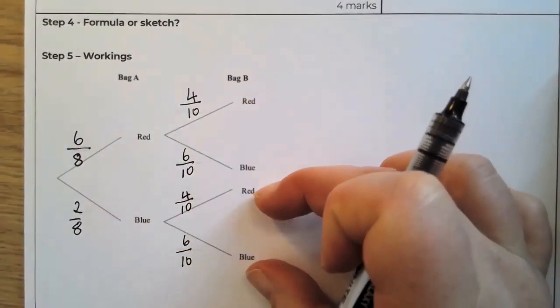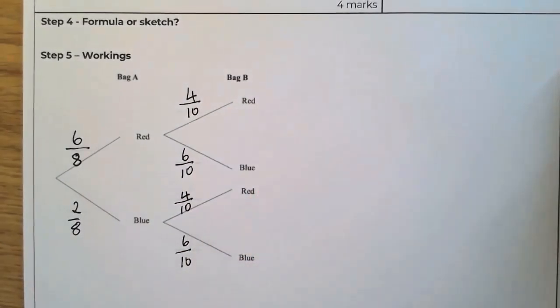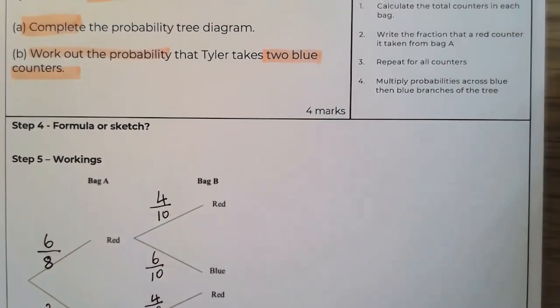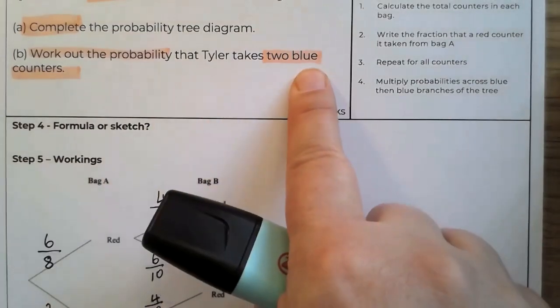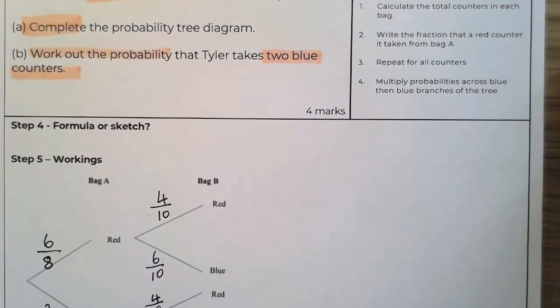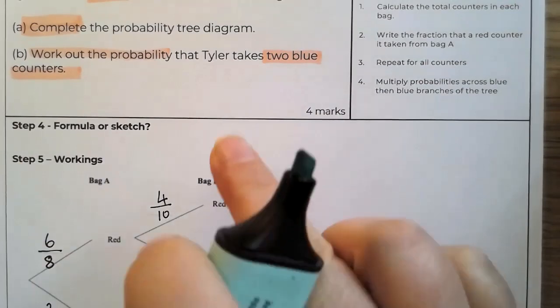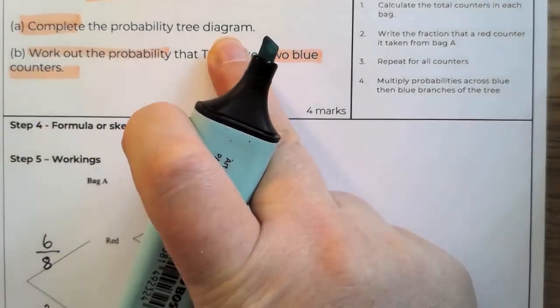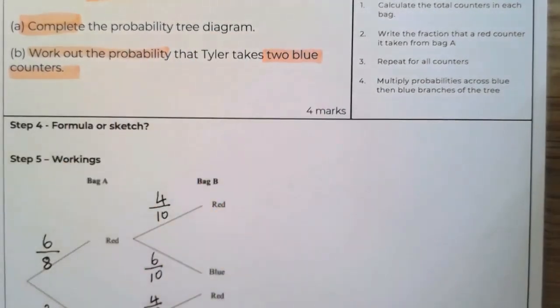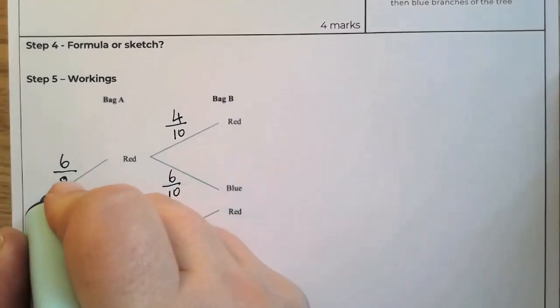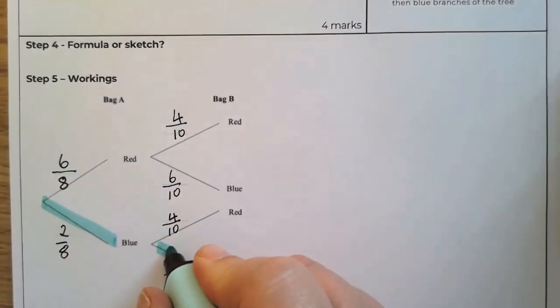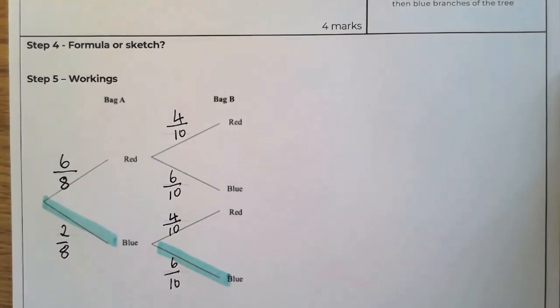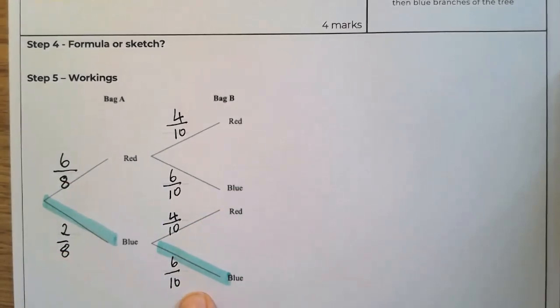And that is repeated here. So whatever's here will also be here. And then we are only looking at the probability that Tyler takes two blue counters. So this is completing it for question A, but question B, we want two blue counters. So there and there. So we're just looking at this probability and this probability.